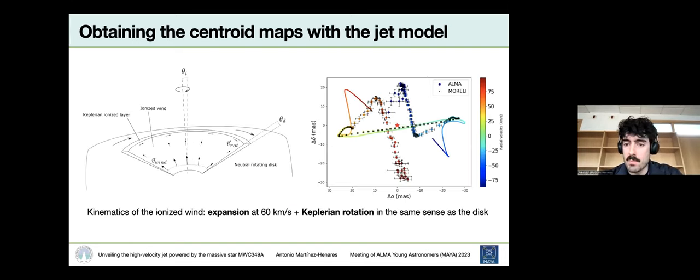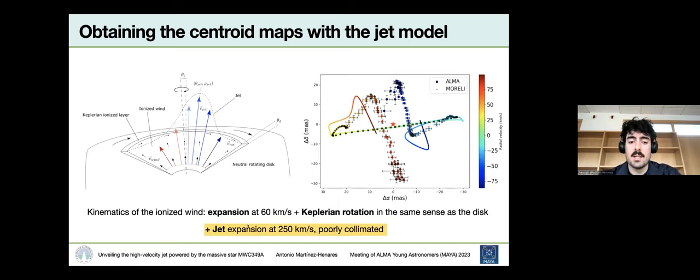How does the centroid map change once we add the jet? We add a jet expanding at 250 kilometers per second, which is poorly collimated, as I told you. We see an improvement here. We see that the shape of the centroid map of ALMA is more similar now to the model one. The next step to keep on obtaining the ALMA observations was to bring these branches a bit closer to the central star. These branches originated likely from the jet. What we did was to remove half of the Keplerian rotation inside the wind and the jet.